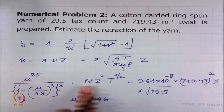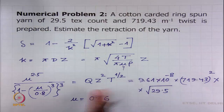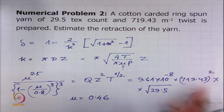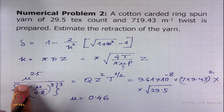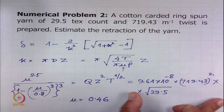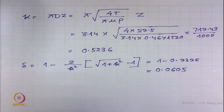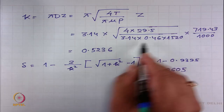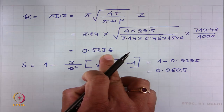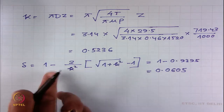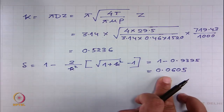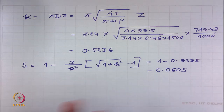For a cotton carded ring-spun yarn, the constant is 9.61 × 10⁻⁸, z = 719.43, and T = 29.5 tex. Solving gives μ = 0.46. We substitute this μ to obtain yarn twist intensity κ = 0.5236, and finally yarn retraction = 0.0605 (i.e., 6.05%).